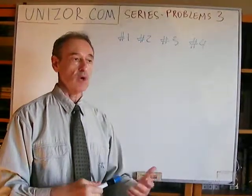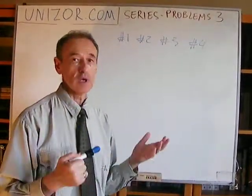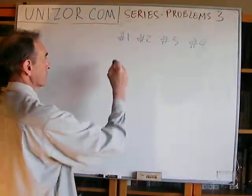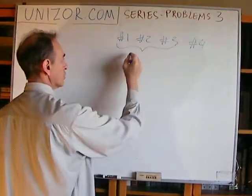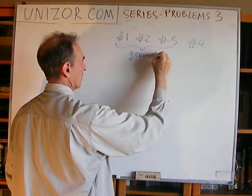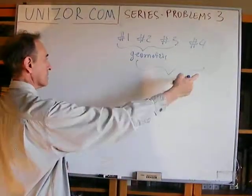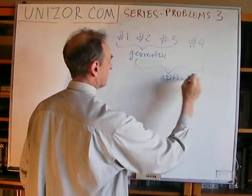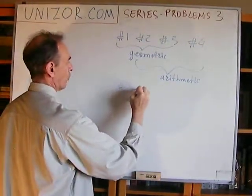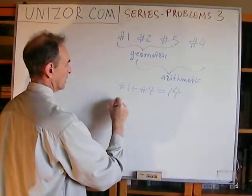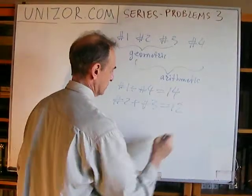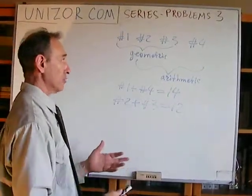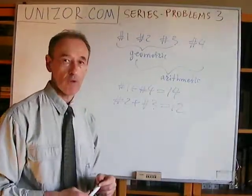We have four elements — number one, two, three, and four — forming some sequence, not necessarily arithmetic or geometric overall; it's just an ordered set of four real numbers. The first three form a geometric progression, the next three form an arithmetic progression, element one plus element four equals 14, and element two plus element three equals 12. These conditions should allow us to determine all four numbers.